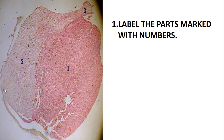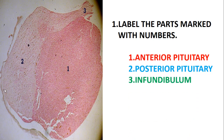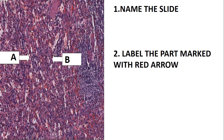This slide is still the pituitary gland. We have the anterior pituitary gland, the posterior pituitary gland, and here we have also shown the infundibulum. Number 1 is the anterior pituitary gland, number 2 is the posterior pituitary gland, and number 3 is the infundibulum. Note that the pars intermedia was already labeled in the previous slide in this tutorial.